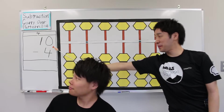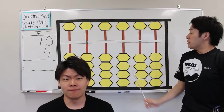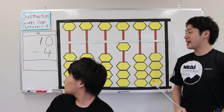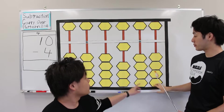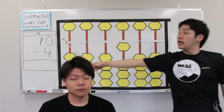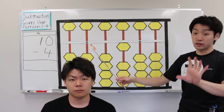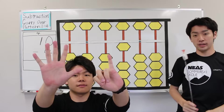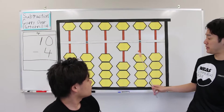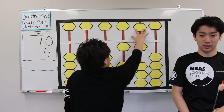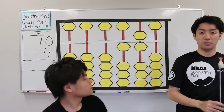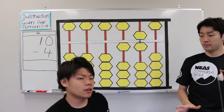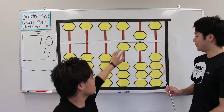First, plus 10. Next, minus 4. What is the answer? 10 minus 4 equals 6. Add 6. The number is 16, but the correct answer is 6. Subtract 10. That's right.